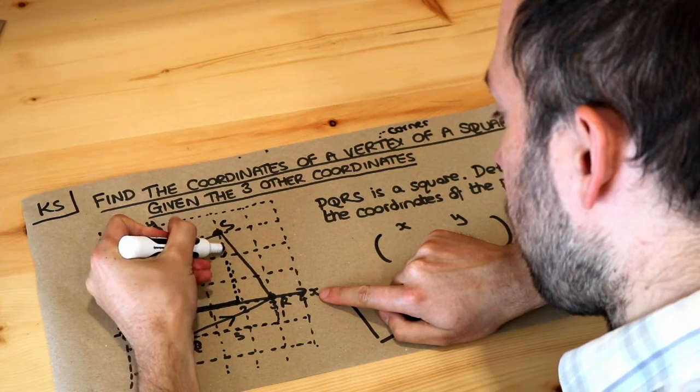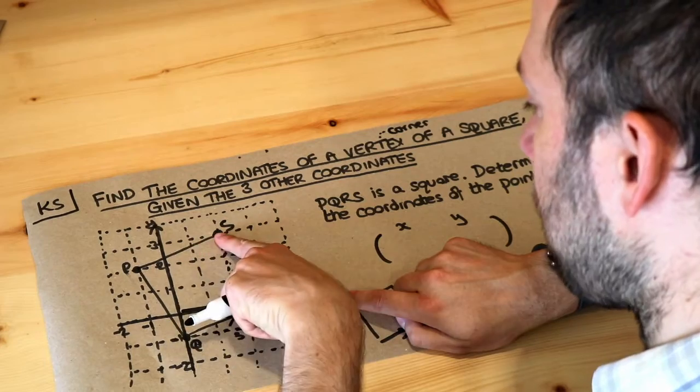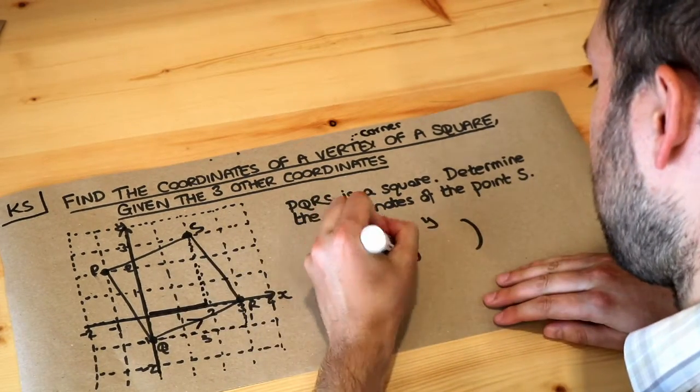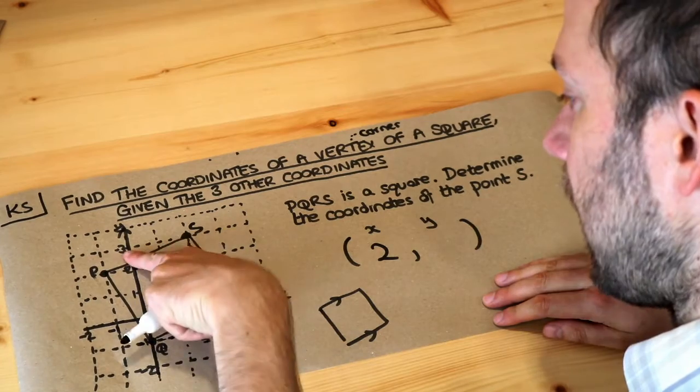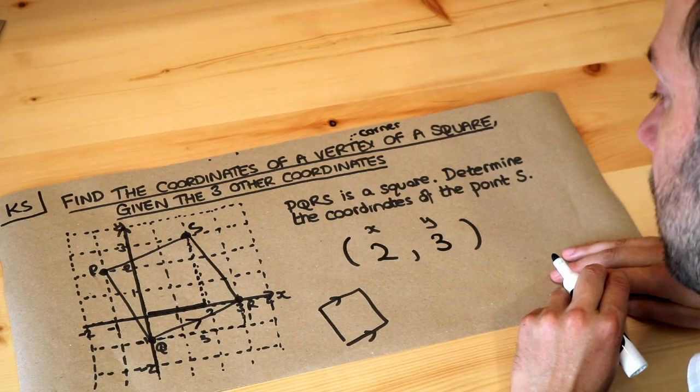And then on the Y axis, we can see the Y value is three at that point. So the X value was two. And then the Y value we can see here is three. And that's the final answer.